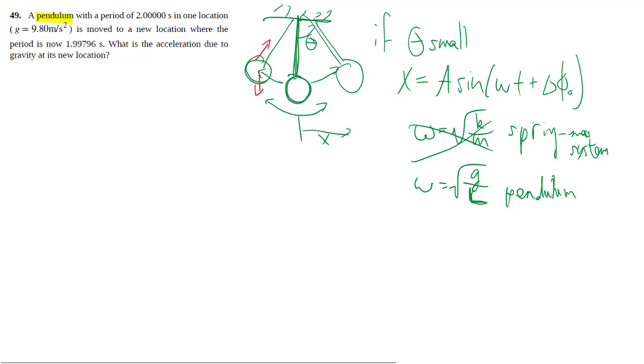So, if we can measure this period, this time, in a very precise manner, as they have in the question, we can actually get a fairly good measurement of the acceleration of gravity to also a high level of precision, just with basically a string and a mass.